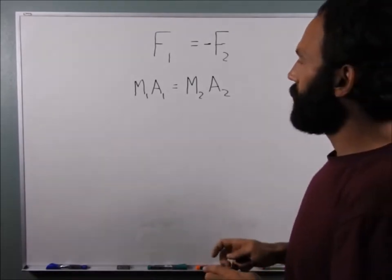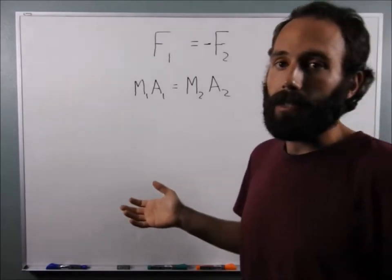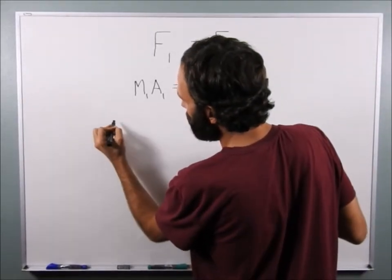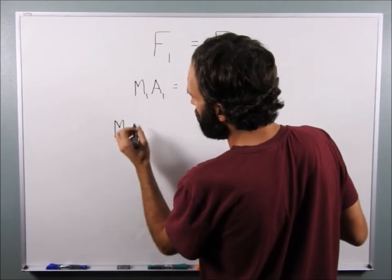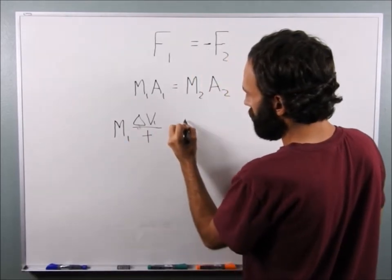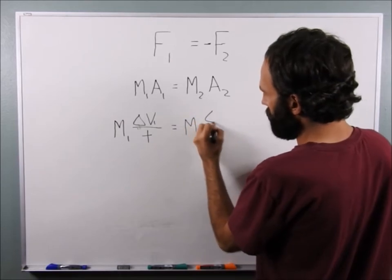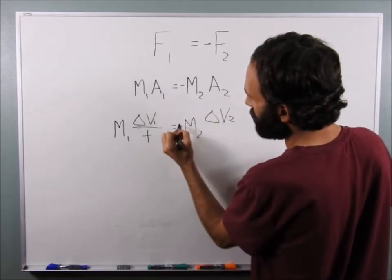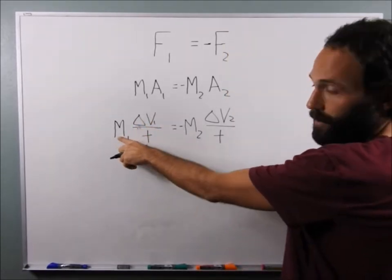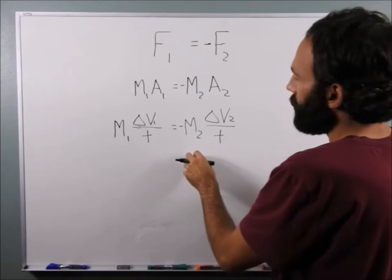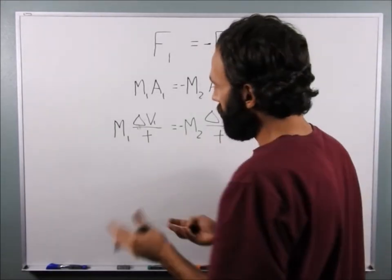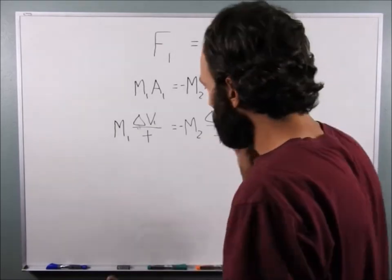So, we can rewrite this as M1 A1 equals negative M2 A2. And now, if you remember, I think I covered this in episode three, that acceleration is equal to the change in velocity divided by time. So, again, we can rewrite this as M1 times delta V1 over T equals negative M2 times delta V2 over T. So, M1 times the change in velocity of this mass divided by time equals negative M2 times the change in velocity of M2 divided by time. And time is constant. It's not different for each mass. The whole thing occurs over a set time.